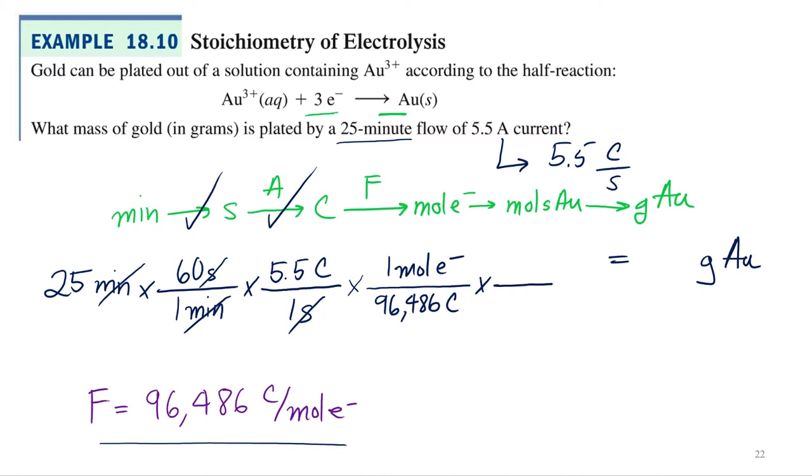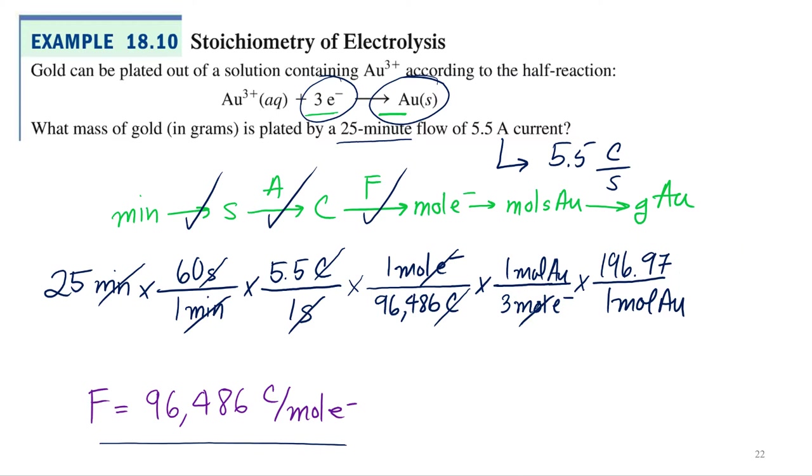And then we just talked about this. For every one mole of gold, I need three moles of electrons, right? So coulombs cancel out. Three moles of electrons, one mole of gold, and then I need one more conversion factor. One mole of gold. Where do we find the molar masses? Periodic table, 196.97 grams.